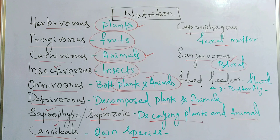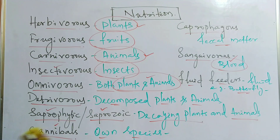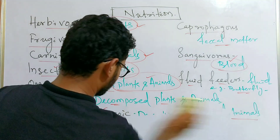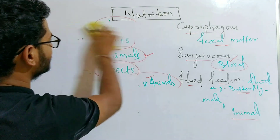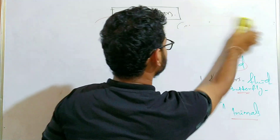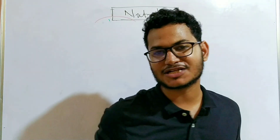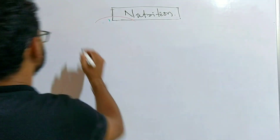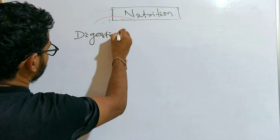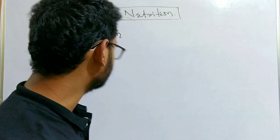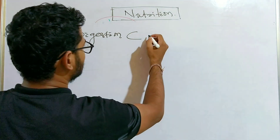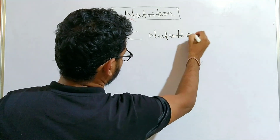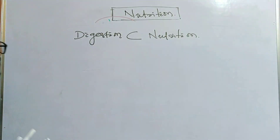Before going into detail, let's talk about the definition of nutrition and how it is different from digestion. Nutrition is a broader term than digestion. Digestion means the simplification of food — the complex foods we eat are simplified by the process of digestion. Always remember: digestion is not the same as nutrition; digestion is a part of nutrition — mathematically, it is a subset of nutrition.